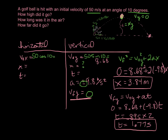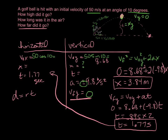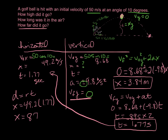Now how far did the ball go? The 1.77 seconds is the time for the whole flight, so we can use it here. Using distance equals rate times time, and 50 cosine 10 equals 49.2 meters per second for our horizontal velocity, we calculate 49.2 times 1.77 seconds. We find that our ball went 87 meters — not a great golf shot, but there it is.